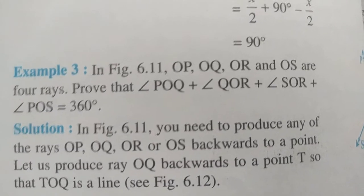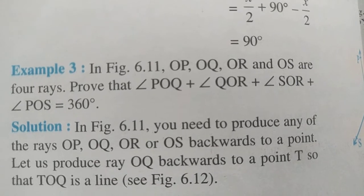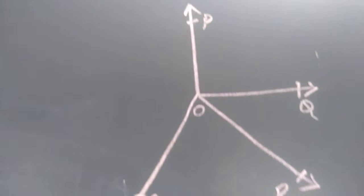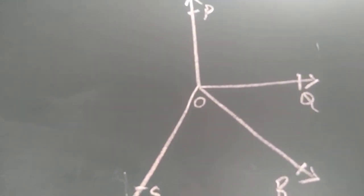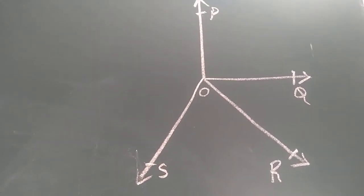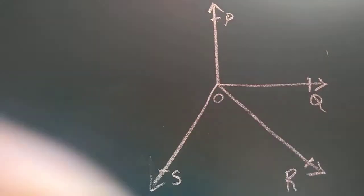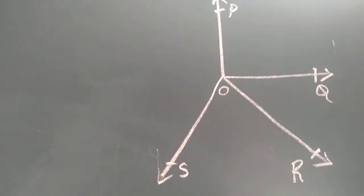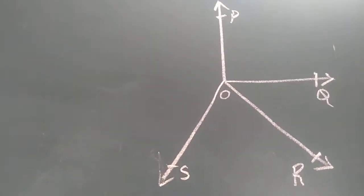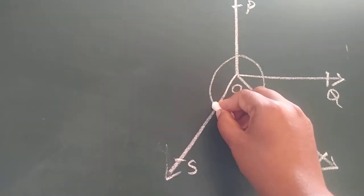This is the question of Example Number 3. In the given figure you have to prove that the sum of all angles is 360 degrees. The four angles in the figure are: angle POQ, angle QOR, angle ROS, and angle SOP. When you add all the angles, the sum should be 360 degrees.